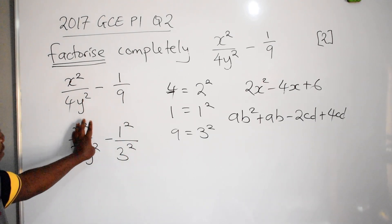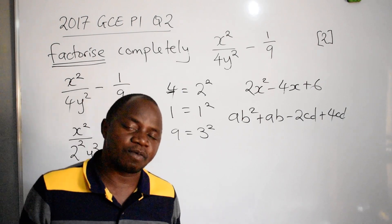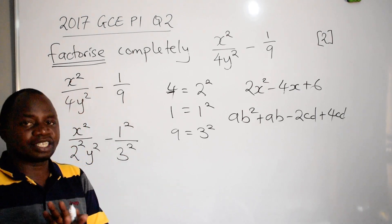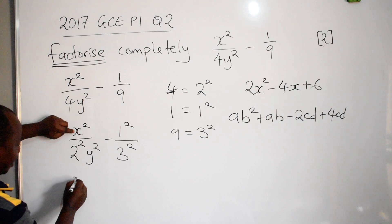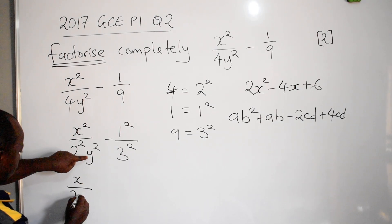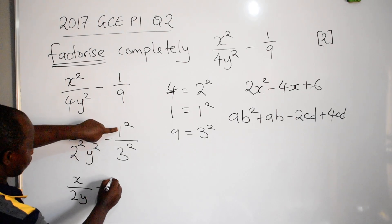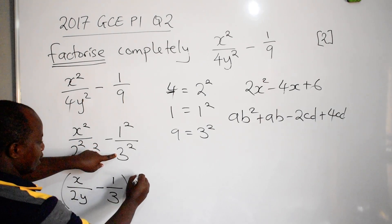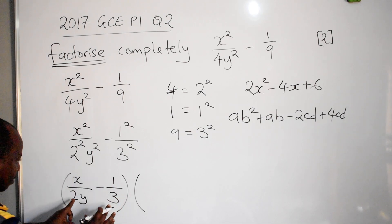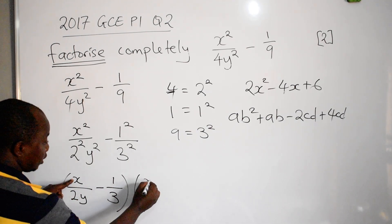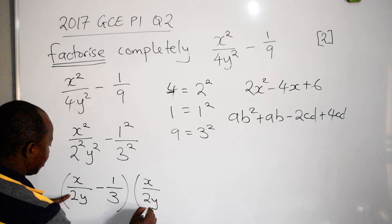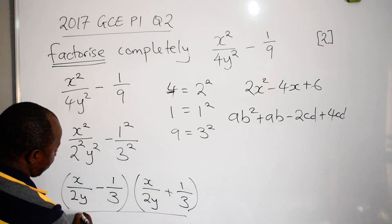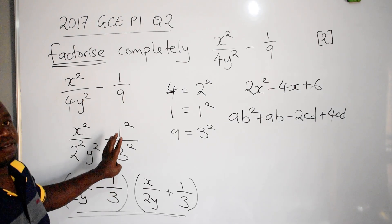Now ignore all the squares and just write the bases. Write x over 2y for the first bracket, minus 1 over 3. For the second bracket, copy everything but change the sign to plus: x over 2y plus 1 over 3. This is your final answer — this is how we factorize such questions.